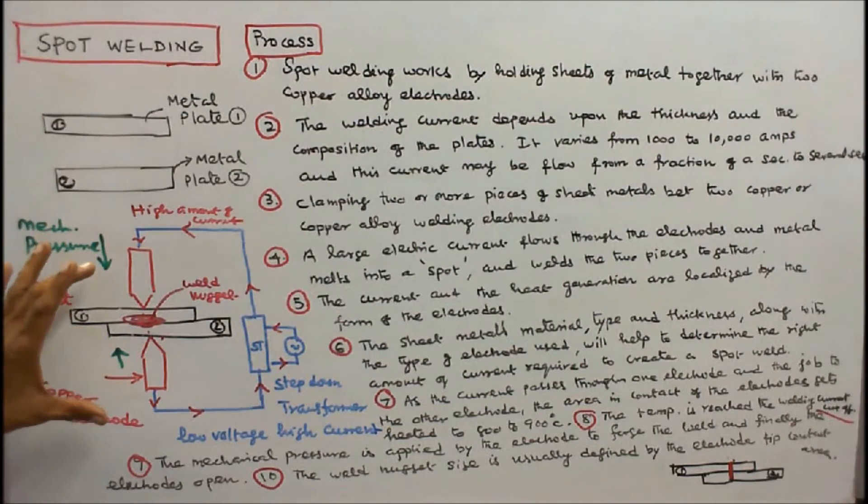The weld nugget size is usually defined by the electrode tip contact area. This is the process of spot welding.